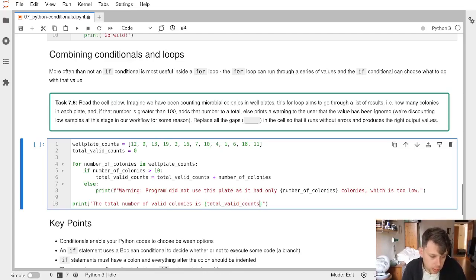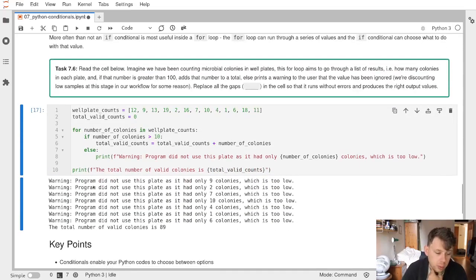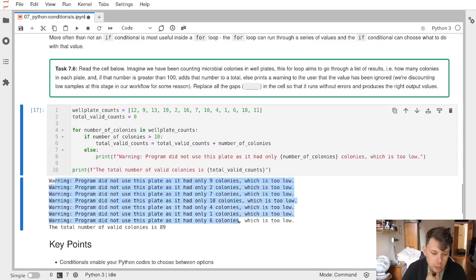Okay, you may notice that I have accidentally forgotten the f at the start of that line. There we go. So we've got warnings for each of the values we didn't use: 9, 2, 7, 10, 4, 1, and 6. And the total number of valid colonies is 80.